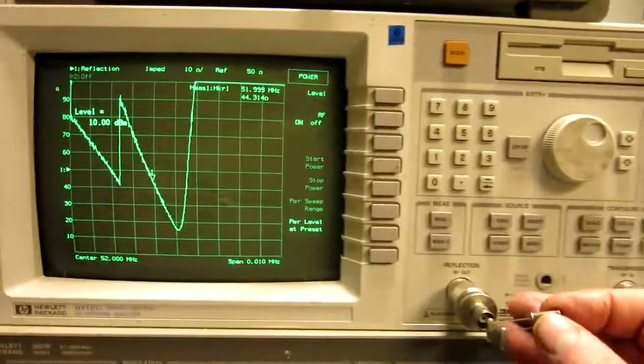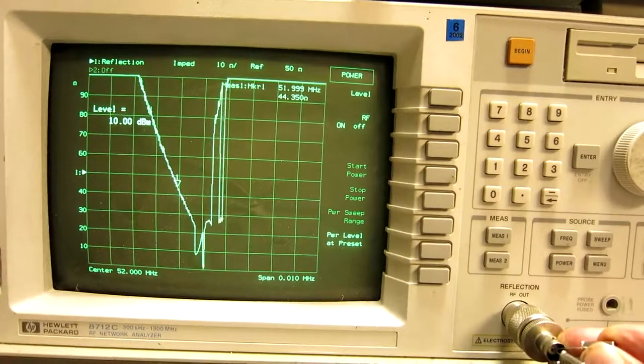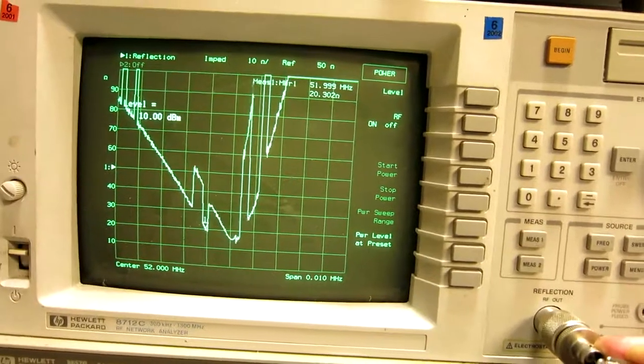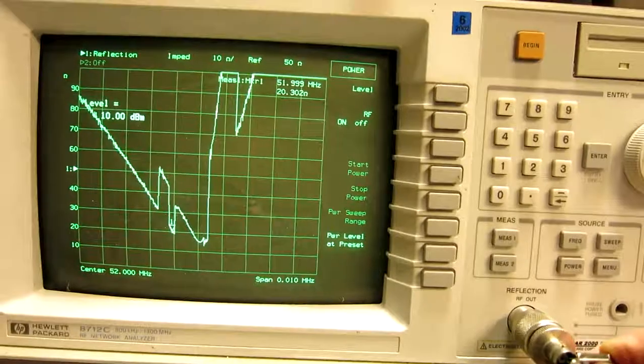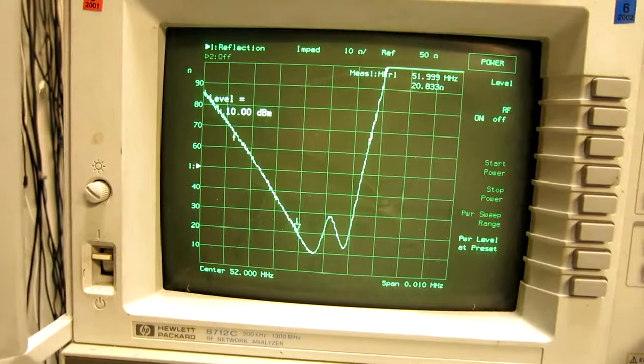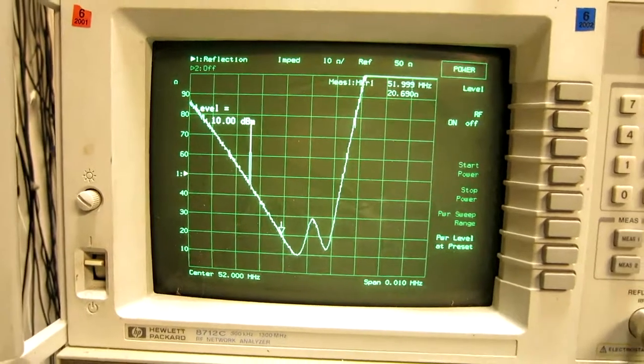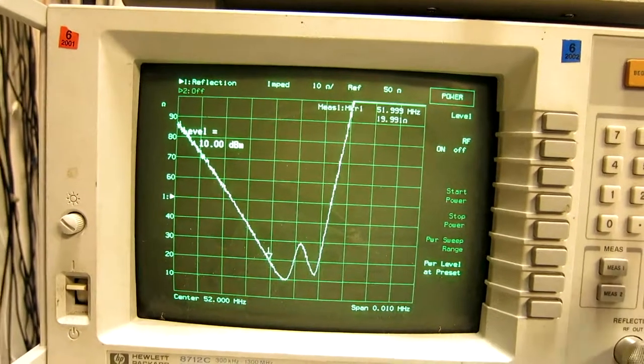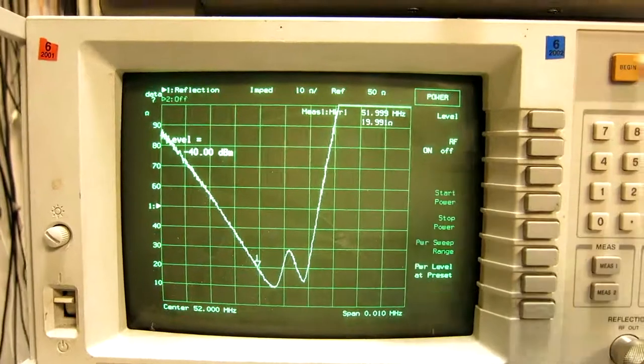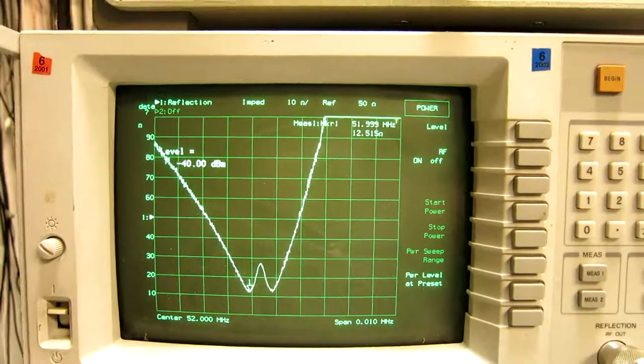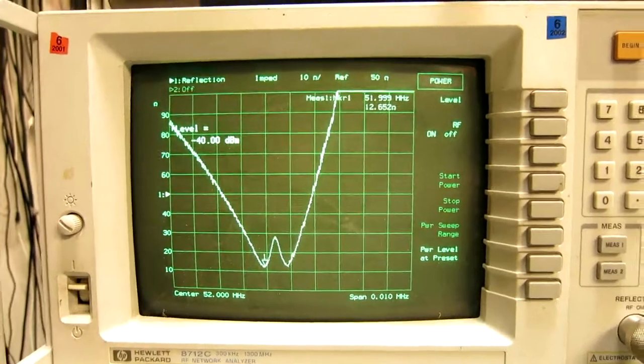But if I put in parallel another crystal which doesn't have exactly the same resonance frequency, this one is different by 1 kHz. Then we get this result. And if I change the power level, we are at minus 40 dBm, the curve changes a bit. Not as much as before.